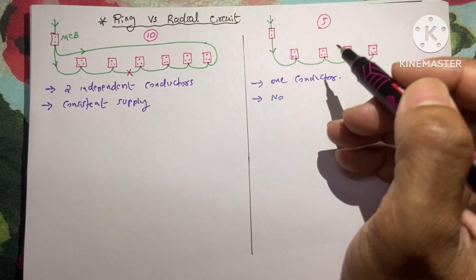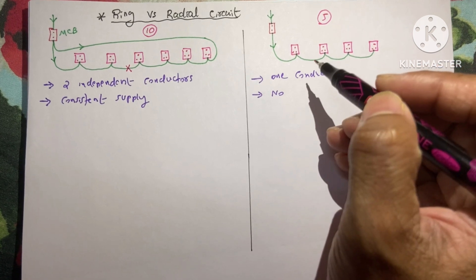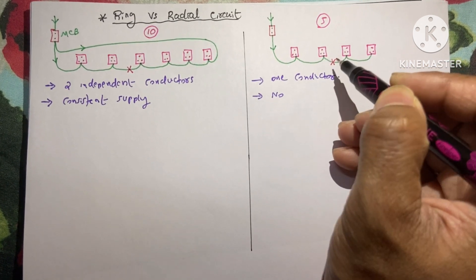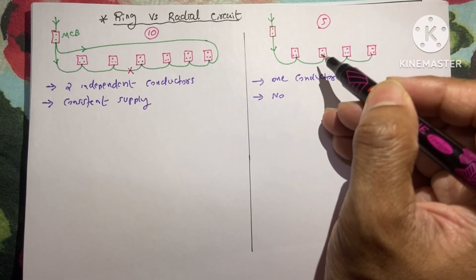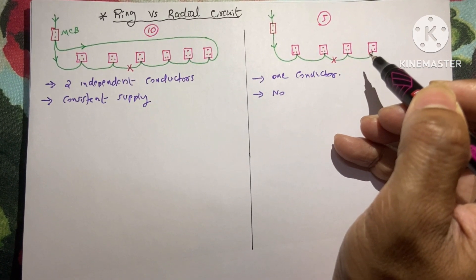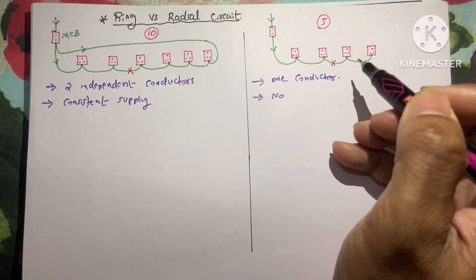But in radial circuit it is not the case. If a cut occurs over here then these two sockets only got the power supply, but these sockets would not get any power supply anymore.